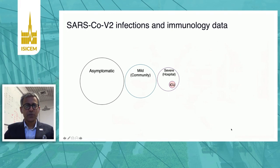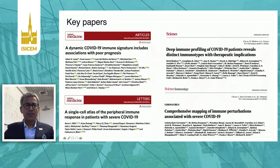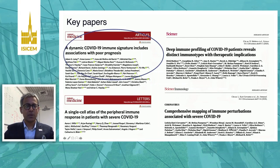When we think about SARS-CoV-2 infection and the immunology data published in the literature, most infections are asymptomatic. Then there are mild community infections and severe hospital or ICU infections. Most published data comes from hospitalized and ICU patients. Key recent manuscripts include the Dynamic COVID-19 Immune Signature and Single Cell Atlas in Nature Medicine, and Deep Immunoprofiling and Comprehensive Mapping of Immune Perturbations in Science. I'm going to focus on a paper we led from the UK, published in Nature Medicine.